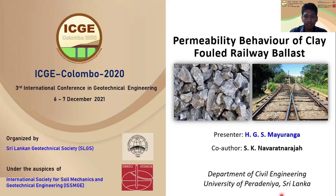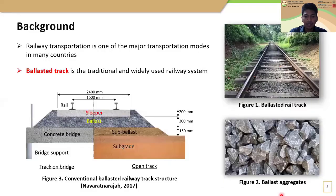Let's move to the background of this study. Railway transportation is one of the popular transportation modes in many countries. When you consider railway track systems, ballast track is the traditional and widely used railway track system in many countries including Sri Lanka. Here you can see a conventional ballast track in Sri Lanka, and this figure shows the ballast aggregates used in ballast tracks.